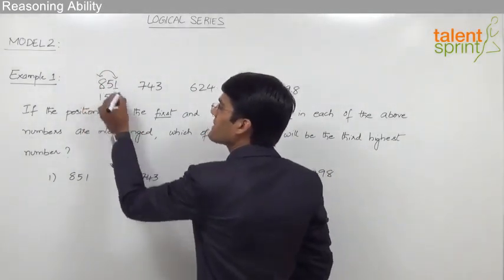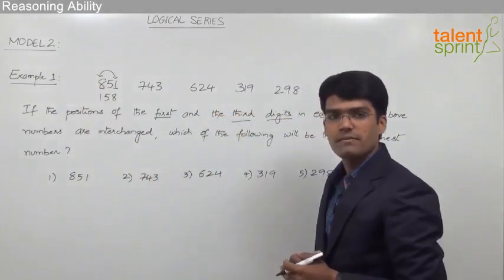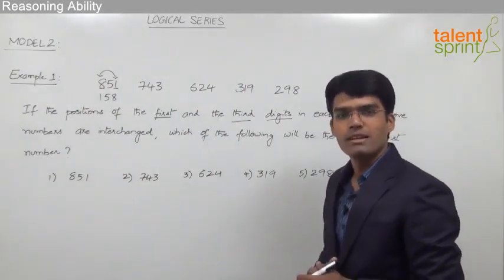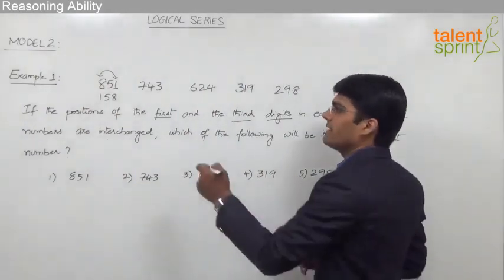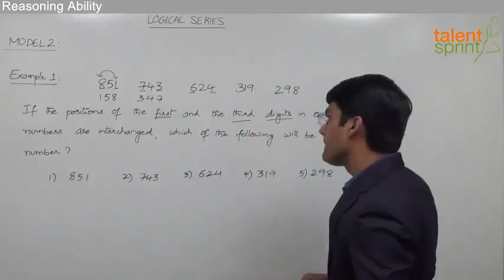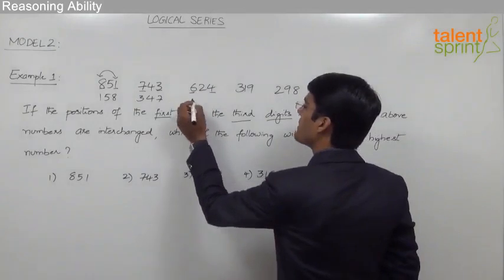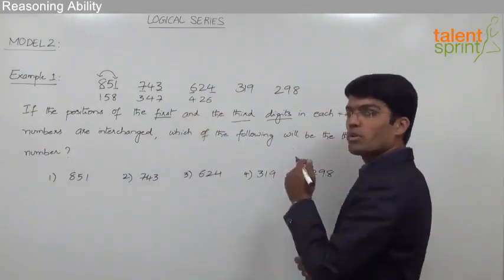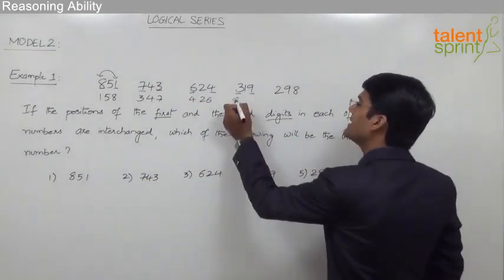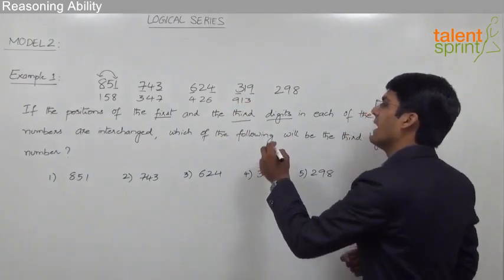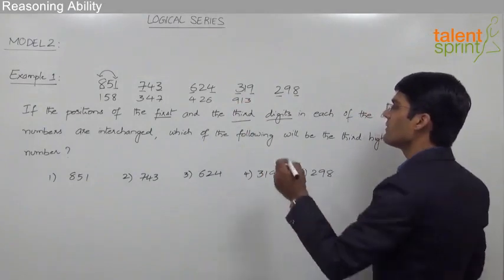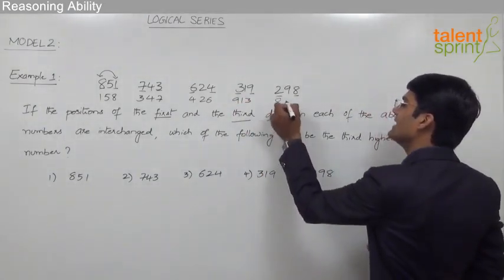As you can see, the third and the first positions have been interchanged. Likewise, we need to interchange the digits in each of the remaining numbers. By interchanging the first and the third digit in 743 we get 347. By interchanging the digits in the third number 624 we get 426. The fourth number is 319, and by interchanging the first and the third digit it becomes 913. The last number is 298, and by interchanging the first digit with the third digit we get 892.